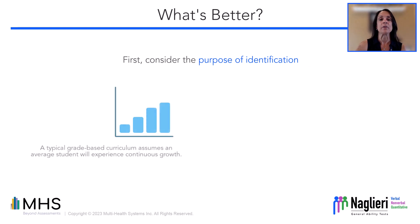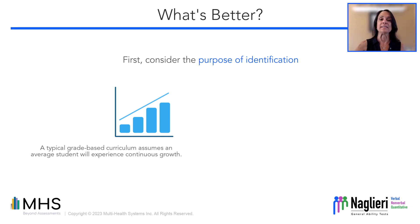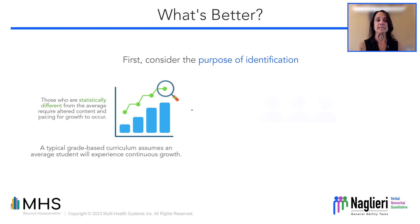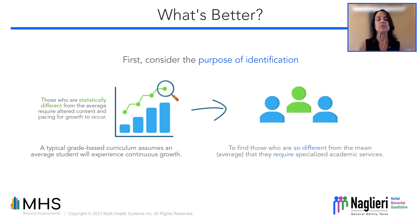Most schools develop a curriculum that is grade-based, which assumes that the average student experiences continuous academic growth over the course of the school year. Educators recognize that students are statistically different on both ends of the learning spectrum and need different curricula and pacing for academic growth to occur. Identifying students as gifted means that they are so different from the mean or average that advanced academic services are required and are needed.